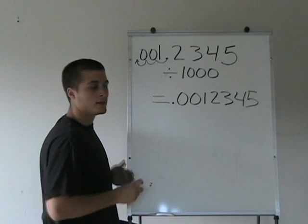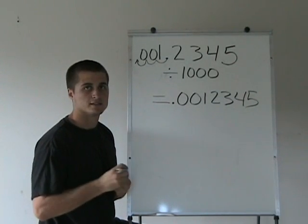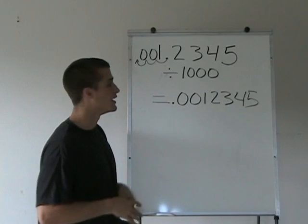And that's how you can easily multiply and divide by a thousand given a decimal or a whole number or anything.